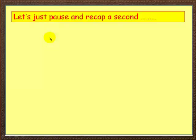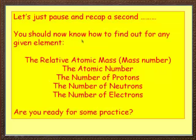Right, now let's just pause and recap just for a second. You should now know how to find out for any given element the relative atomic mass, that's this mass number, the atomic number, number of protons, neutrons, electrons. Just to remind you, protons is given by the atomic number, electrons is given by the atomic number, neutrons is given by the difference between these two here.